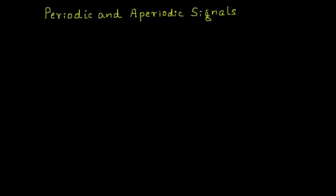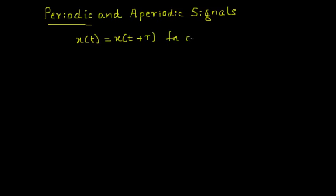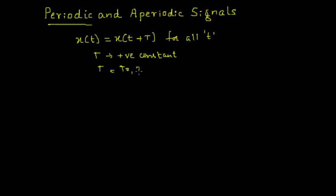Welcome to the video lecture on periodic and aperiodic signals. A continuous time signal x of t is said to be periodic if it satisfies the condition x of t equals x of t plus capital T. This condition should be satisfied for all t, where lowercase t represents time and uppercase T represents any positive constant.